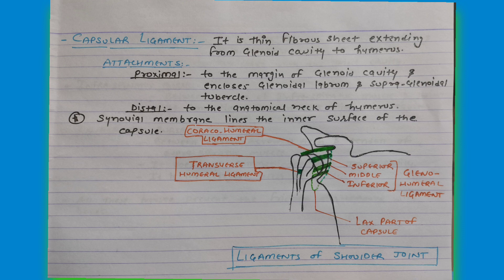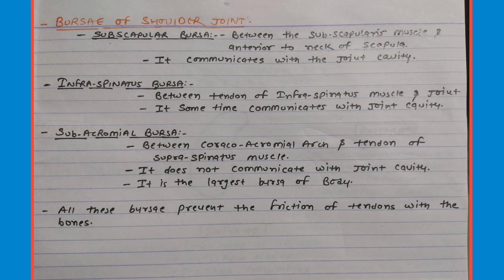The next heading is the bursae of the shoulder joint. The first is the subscapular bursa, which lies below the subscapularis muscle and the neck of the scapula, and it always communicates with the joint cavity. The second is the infraspinatus bursa, which lies between the tendon of the infraspinatus muscle and the joint, and only occasionally communicates with the joint cavity. The third is the subacromial bursa, which lies between the coracoacromial arch and the tendon of the supraspinatus muscle, and this is the only bursa that does not communicate with the joint cavity. All three bursae prevent friction of the tendons with the bones.